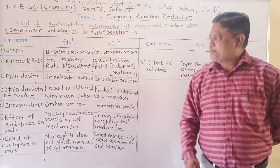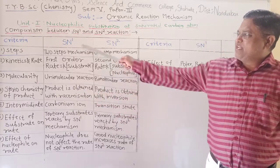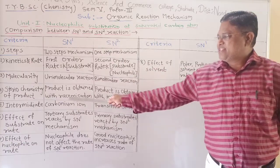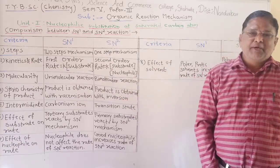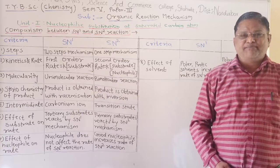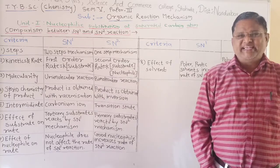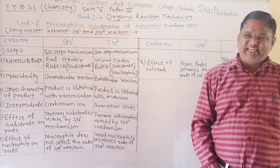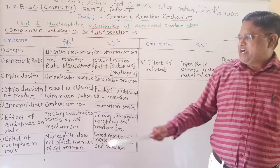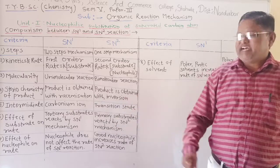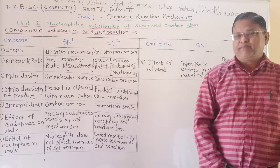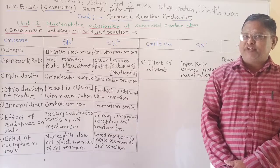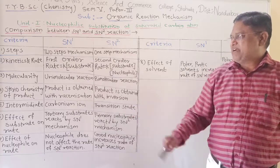Now, the fourth criteria is stereochemistry. In SN1 reaction, the product obtained shows racemization because in SN1 mechanism, a planar carbonium ion is formed, which is attacked by the nucleophile in the fast step, and we get a mixture showing racemization — that is, 50% inversion of configuration and 50% retention of configuration.